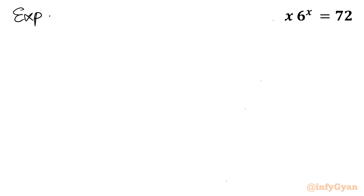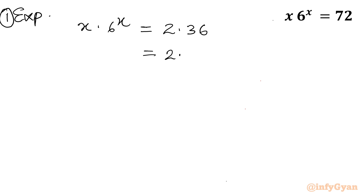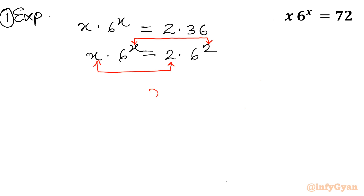Method 1 — using exponent properties. We write x·6^x = 72. We can factor 72 as 2 times 36, and write 36 as 6 squared, giving 2·6². Comparing the left-hand side x·6^x with the right-hand side 2·6², we can directly conclude that x = 2. The exponential method is quite easy once you can factorize 72 in this form.